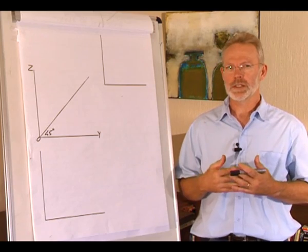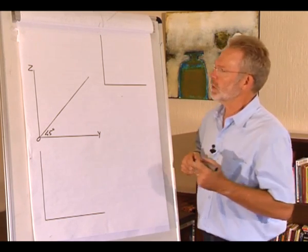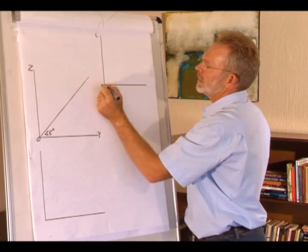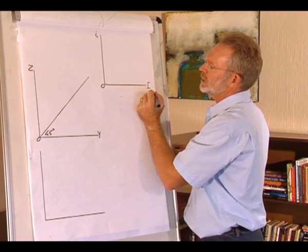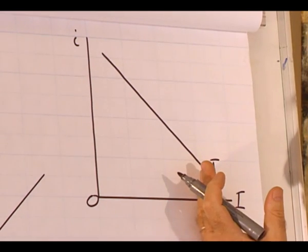We're now going to derive the IS curve. To do that, we start with what we know. We have an interest rate investment relationship. We know it's negative. This gives us our investment function.